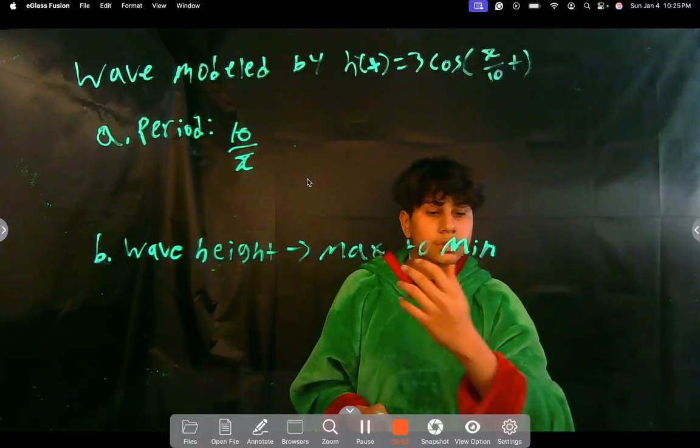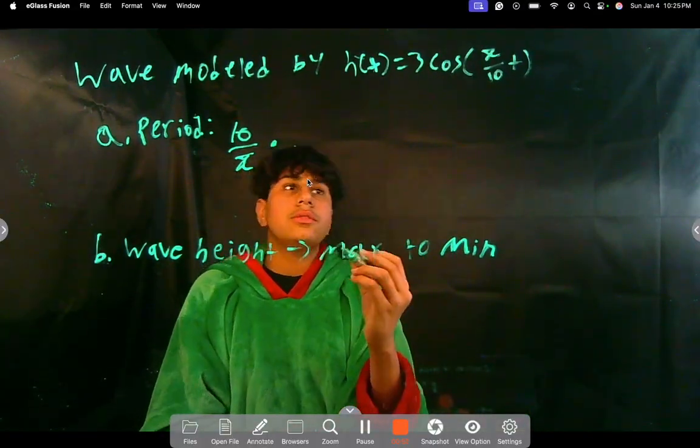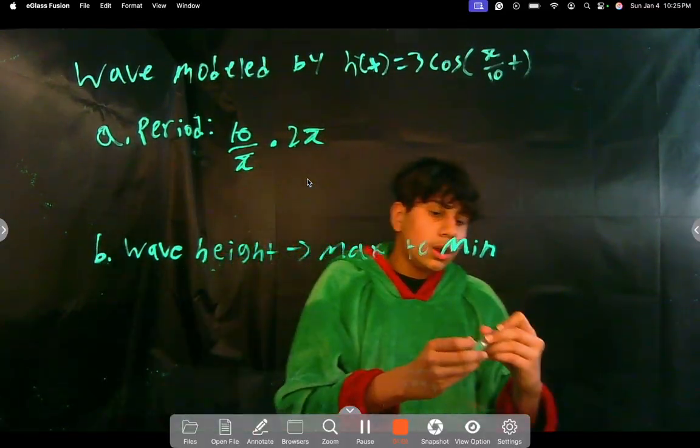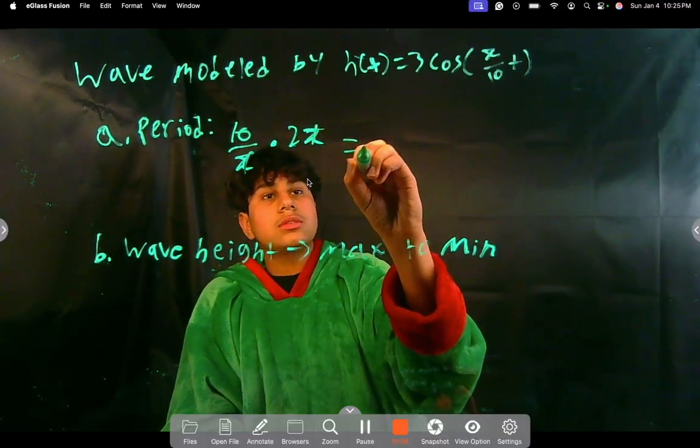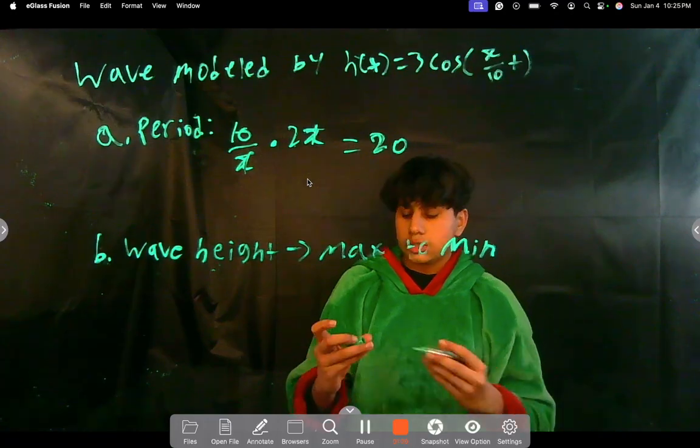So it's 10 over π times the general period for a cosine, right? So this is going to be—the π's cancel—which is 20. So the period here is 20. That's pretty easy.